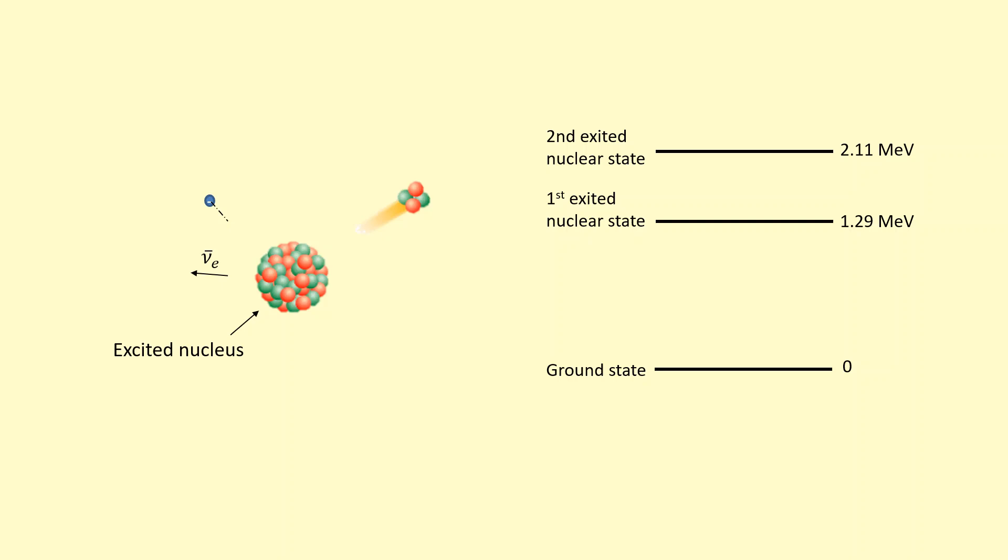Let's say after this alpha decay, the nucleus is formed in this state here, the top second excited nuclear state there. When it excites back down, it's going to emit a photon.